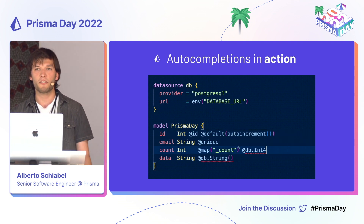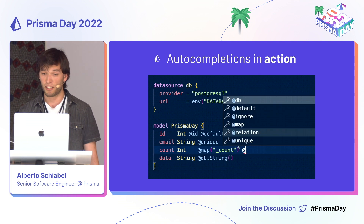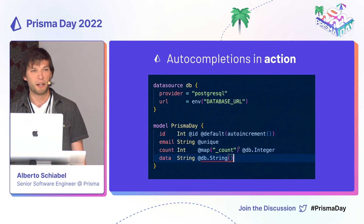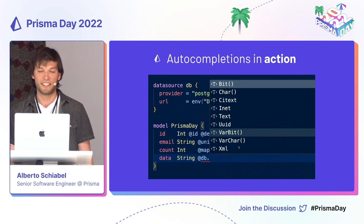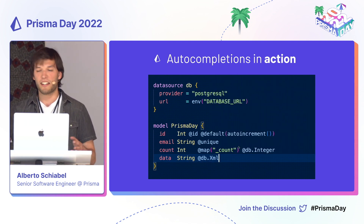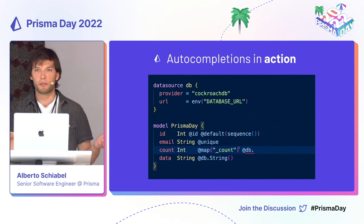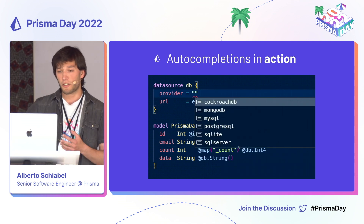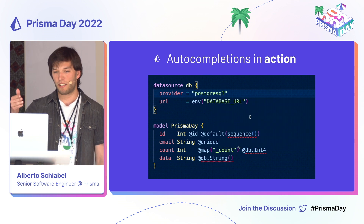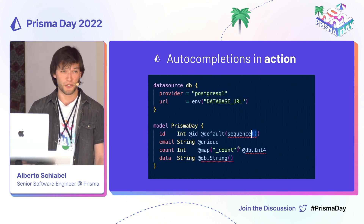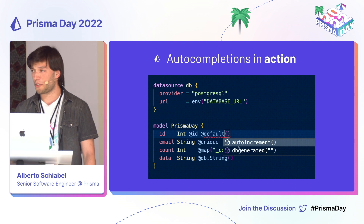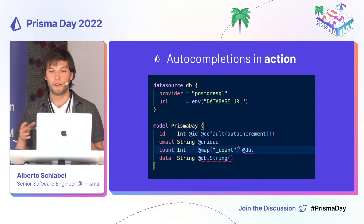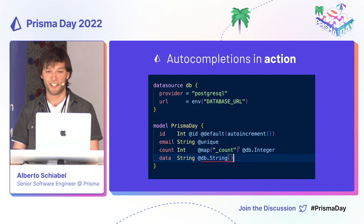However, there are some native types that change drastically. For instance, you can see the red squiggly line provided by our linting in the editor. Postgres supports the XML data type; CockroachDB doesn't. And our auto-suggestions reflect that. I really encourage you to try out our Prisma extension and see how our autocompletions may change.